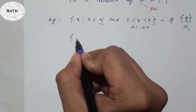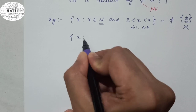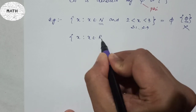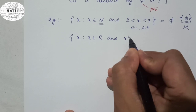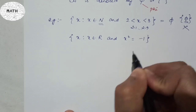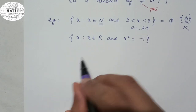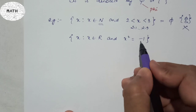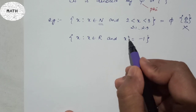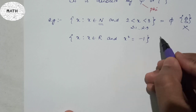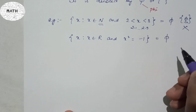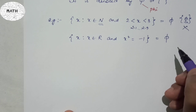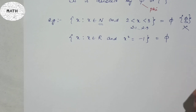Another example: suppose x belongs to real numbers and x squared equals minus one. Remember, a square cannot be negative. So there is no real number satisfying this condition, and the answer is an empty set.